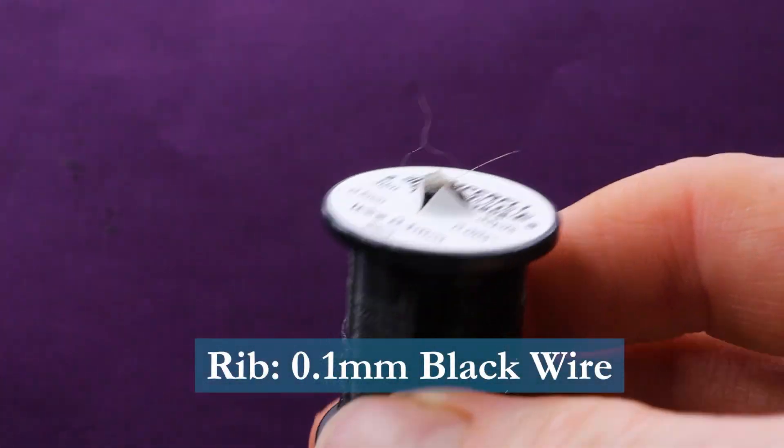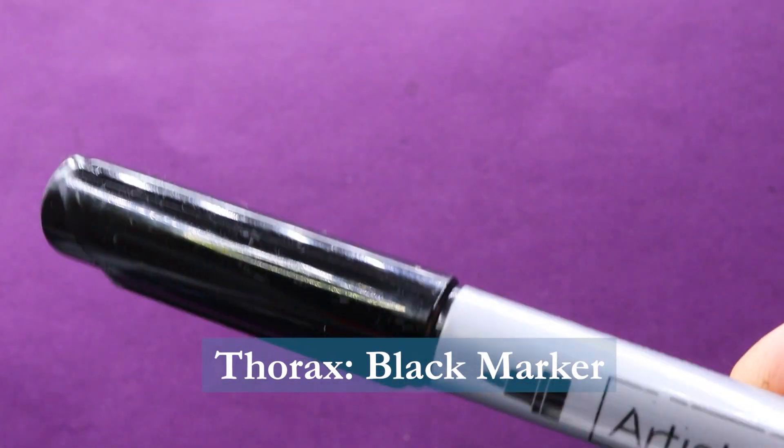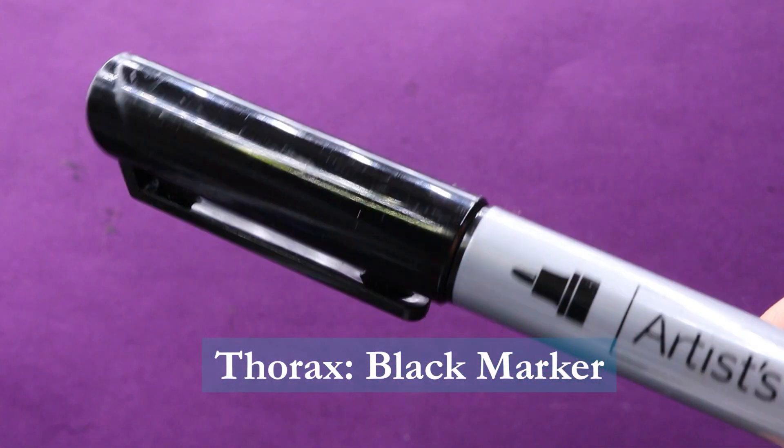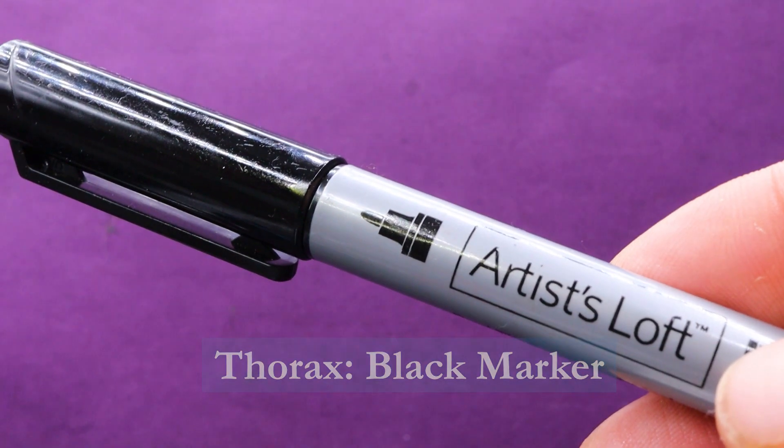And for the rib I'll be using fine wire, black wire. And I'm also going to be using a marker for the thorax or you could use black thread. I'm just using a black marker by Artist's Loft.